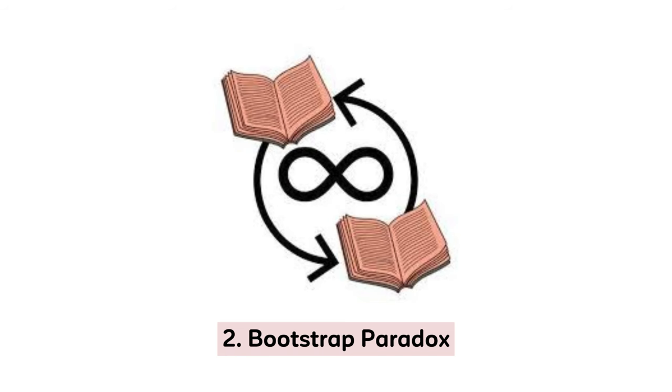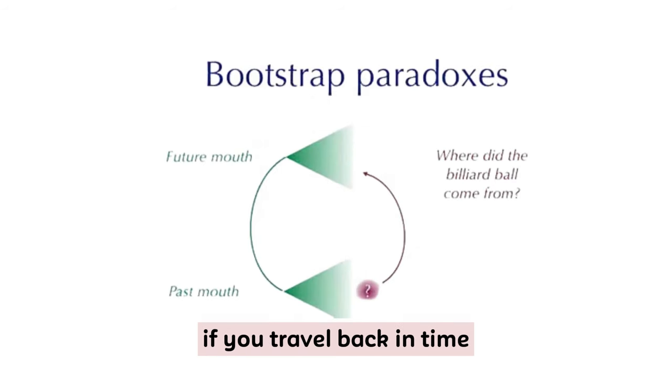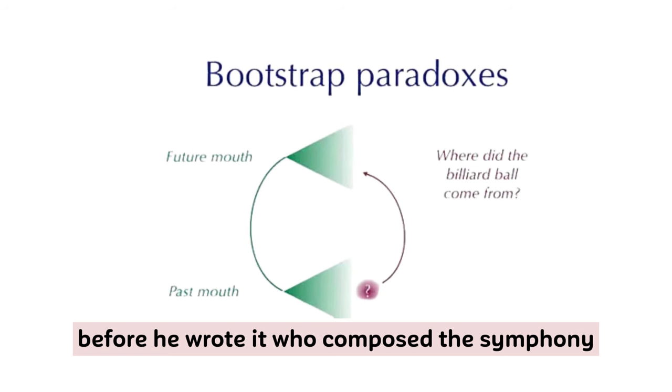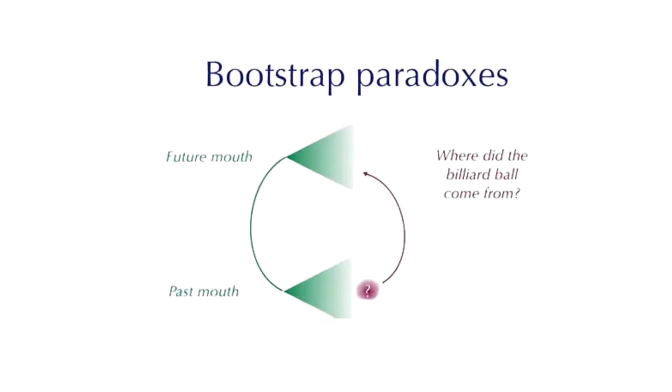2. Bootstrap Paradox. If you travel back in time and provide Beethoven with his own symphony before he wrote it, who composed the symphony? It's a loop of causality with no clear origin.